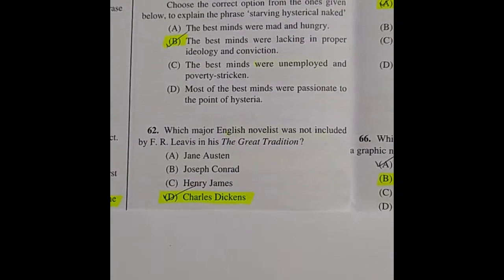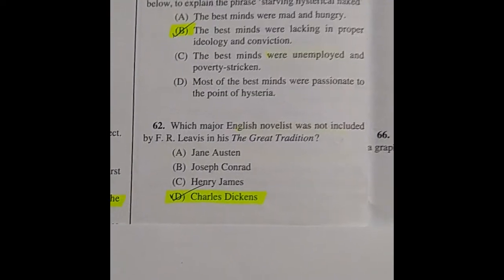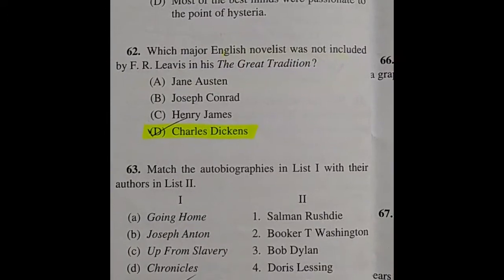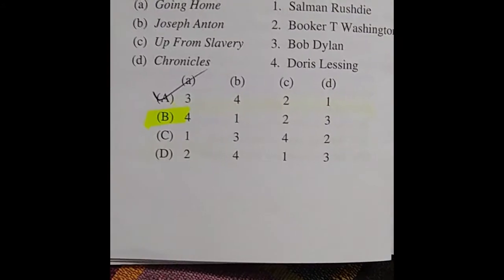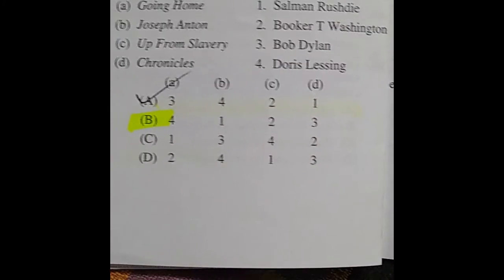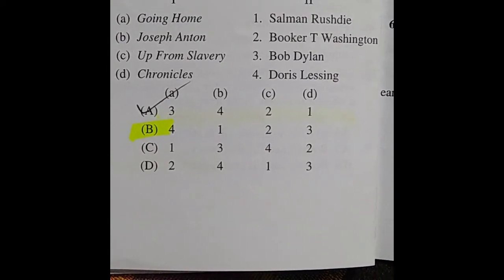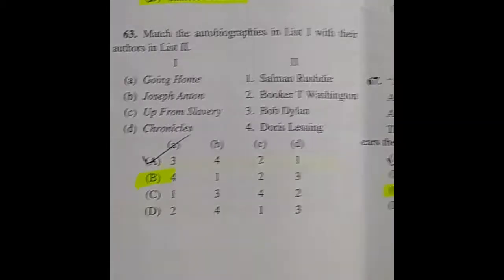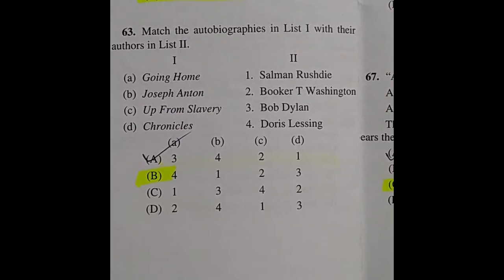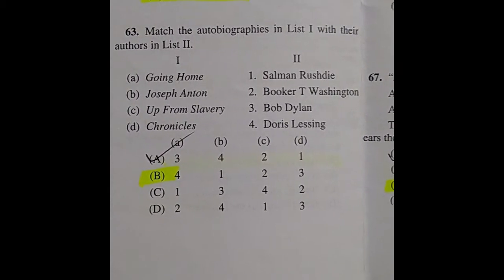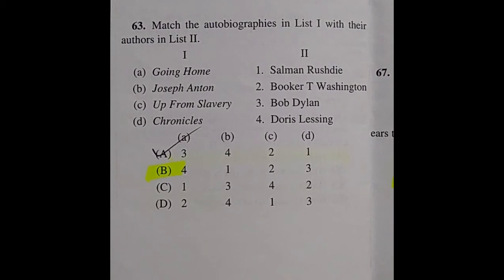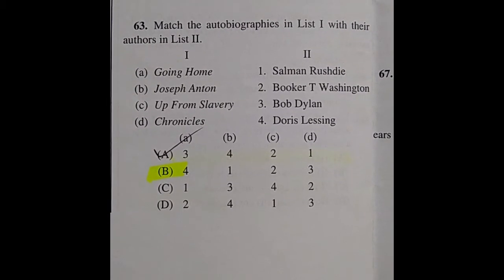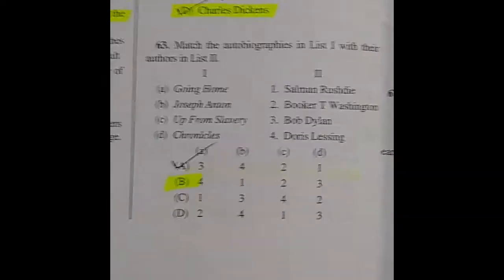Question 62: Which major English novelist was not included by F.R. Leavis in The Great Tradition? The answer is option D: Charles Dickens. Question 63: Match the autobiographies in List 1 with their authors in List 2. List 1: Going Home, Joseph Anton, Up from Slavery, Chronicles. List 2: Salman Rushdie, Booker T. Washington, Bob Dylan, Doris Lessing. The right answer is option B: Going Home — Doris Lessing; Joseph Anton — Salman Rushdie; Up from Slavery — Booker T. Washington; Chronicles — Bob Dylan.